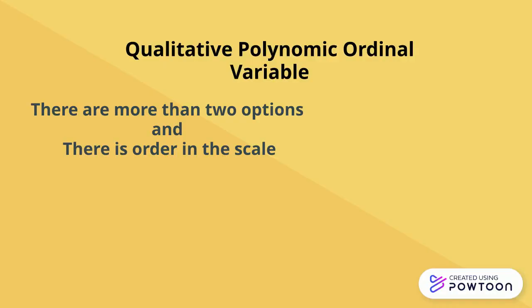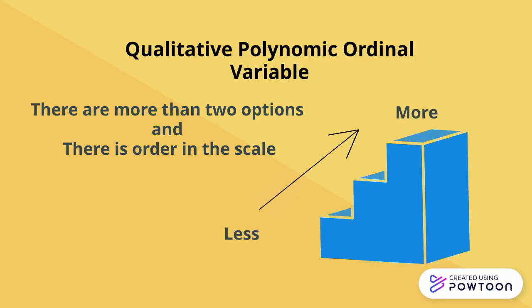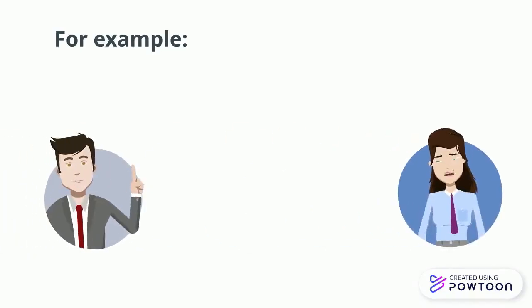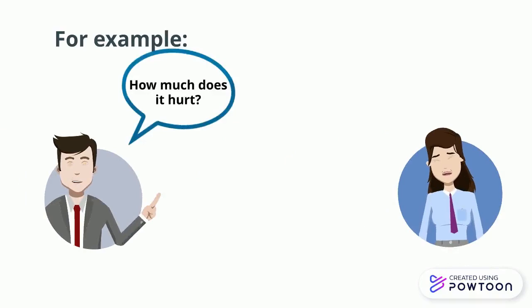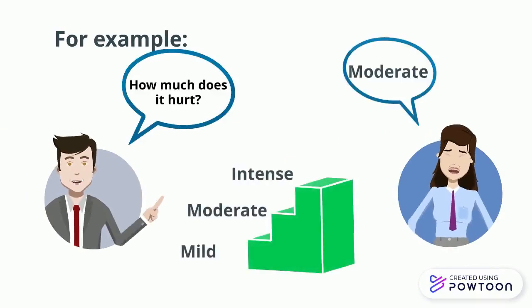In qualitative polynomic ordinal variables, there are more than two options, and there is order in the scale, going from less to more. For example, how much does it hurt? Mild, moderate, or intense.